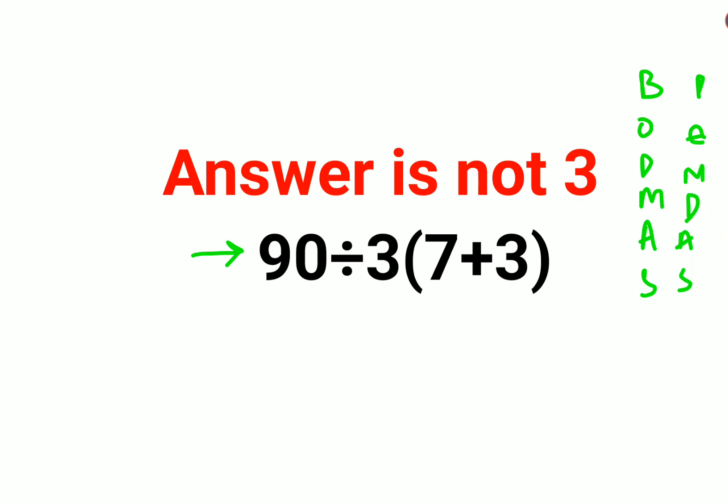So first we will keep the rest of the question as it is: 9 divided by 3. Since there is no sign between the 3 and the bracket, you will multiply it, because when there is no sign, just take it as multiplication.